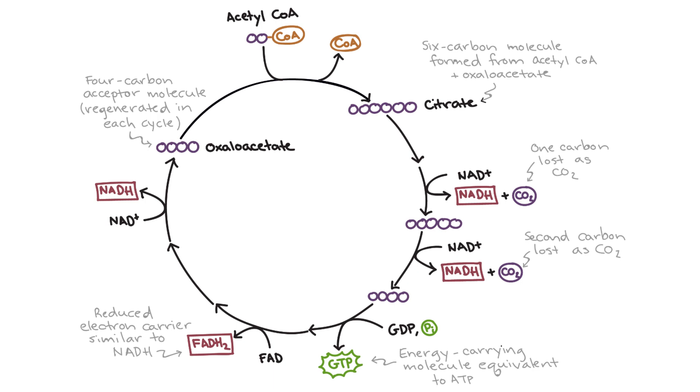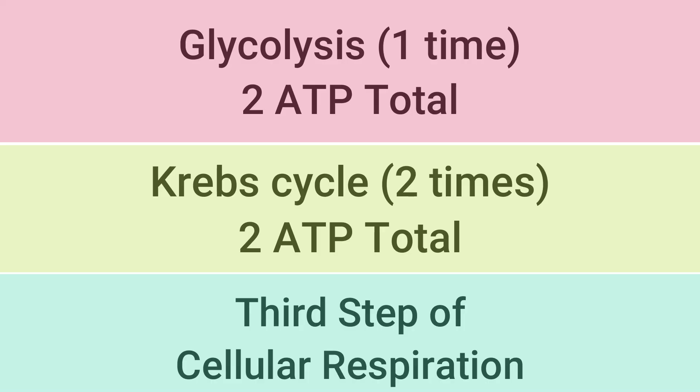but the main goal of Krebs cycle is also to produce a lot of electron carriers like NADH and FADH2. These electron carriers will help us create a lot of ATP in the third step of cellular respiration. Think of all the steps we've discussed so far as kind of setup steps for the third step, the electron transport chain. The electron transport chain, or ETC, is where we're going to produce most of our ATP.